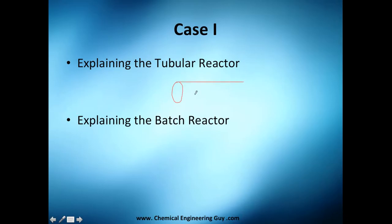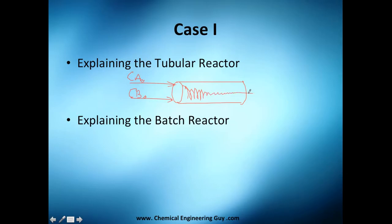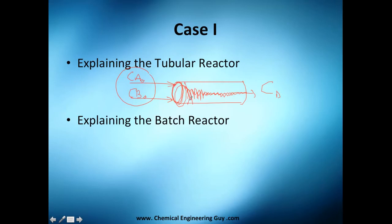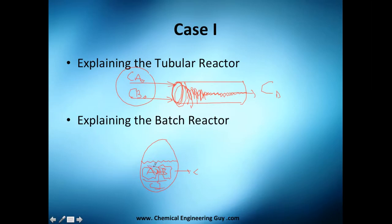In a tubular reactor, you have A and B entering with their initial concentrations. As they travel through the tube, they react and their concentrations decrease — so the highest concentrations are right at the inlet, which is exactly what we want. In a batch reactor, similarly, you load A and B at high concentrations and they are everywhere in the vessel simultaneously, so it suits perfectly for Case 1.